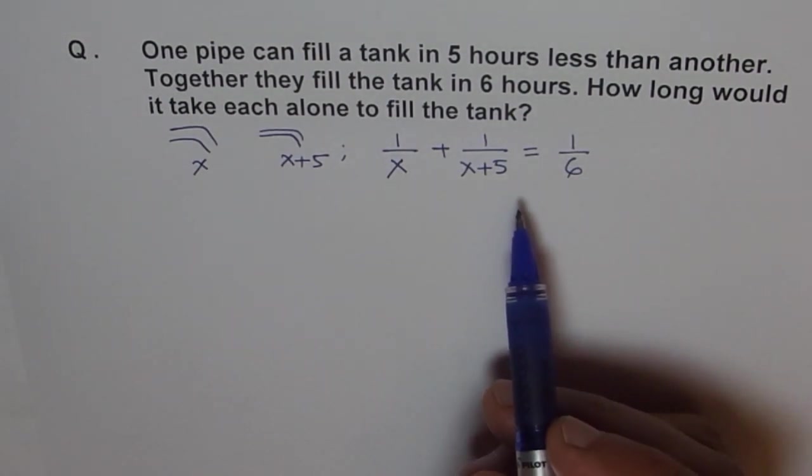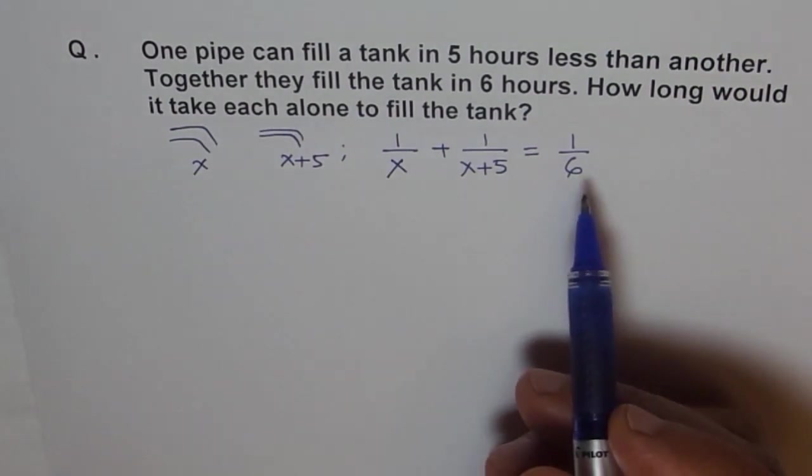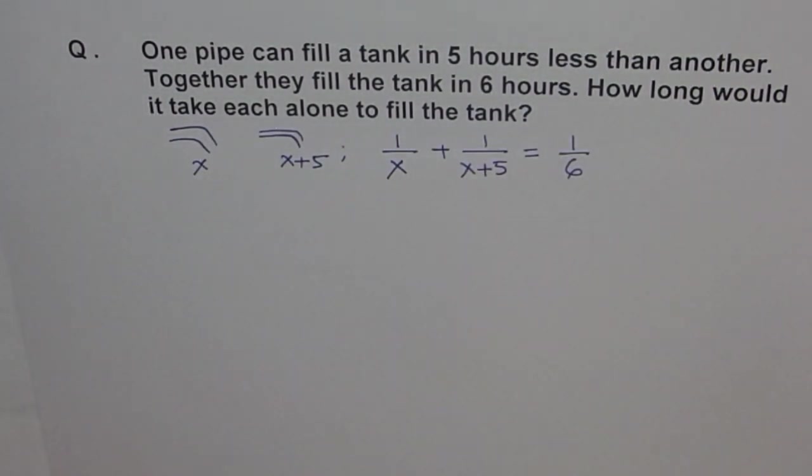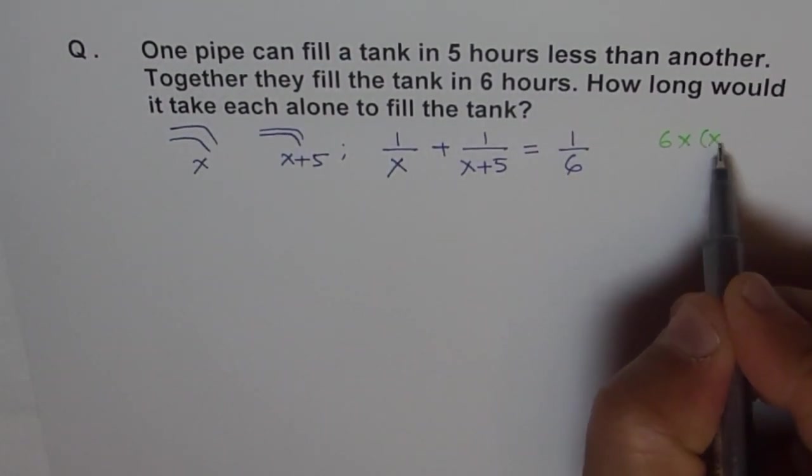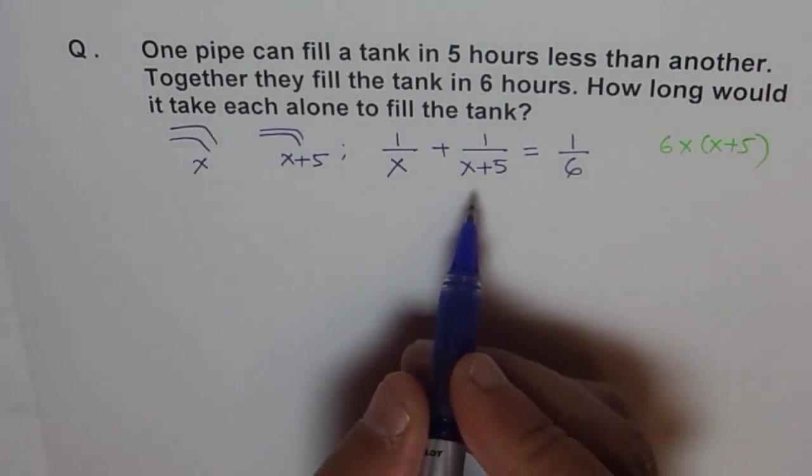Now this is the equation. We have only one variable so we can get rid of our denominator and solve it. Let's multiply each with the common denominator. The common denominator for us is 6x into x plus five. We will multiply each term with this, get rid of the denominator, then there will be a simple quadratic equation to solve.